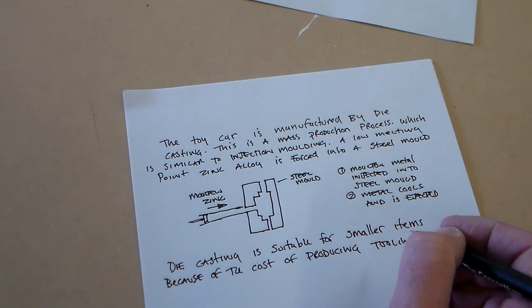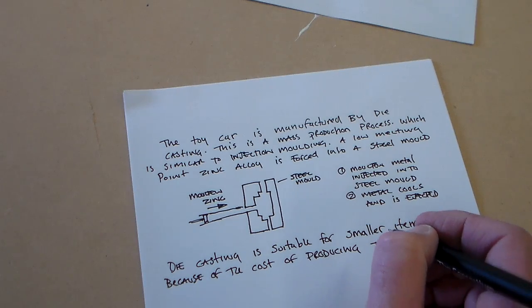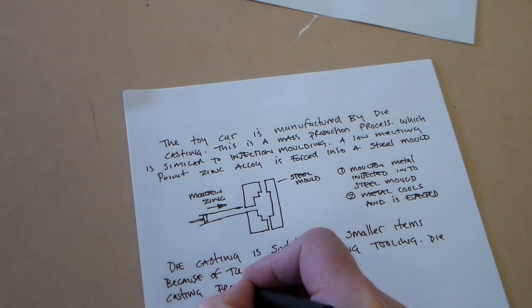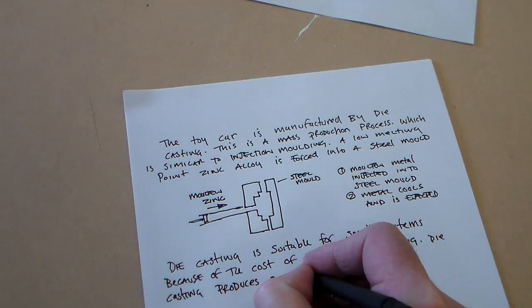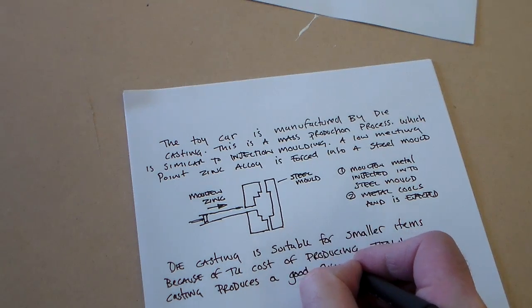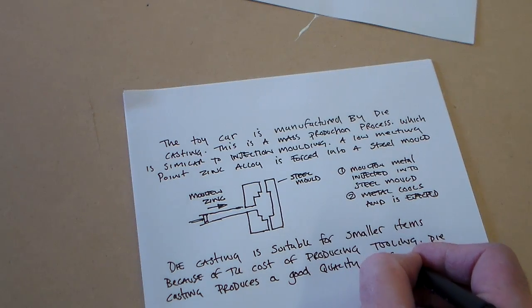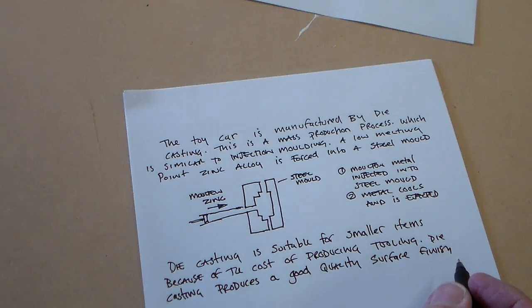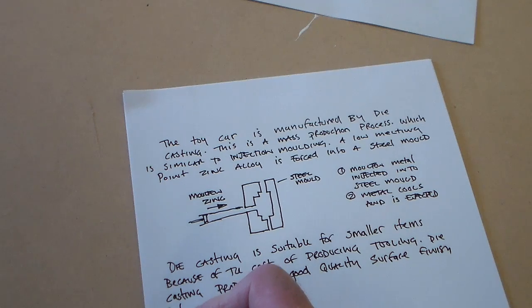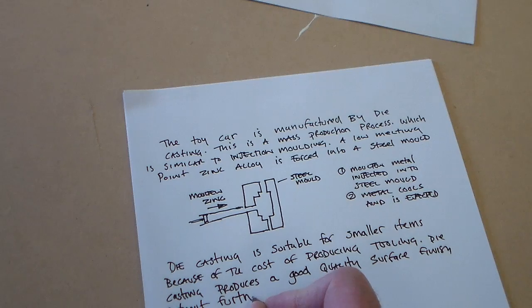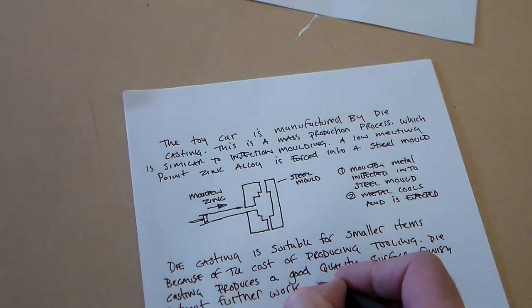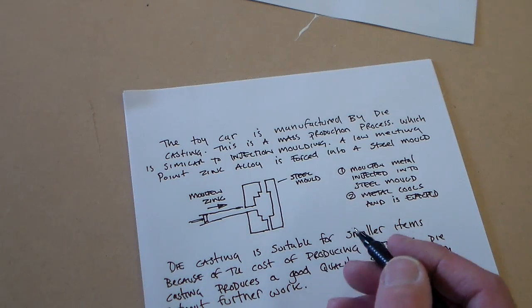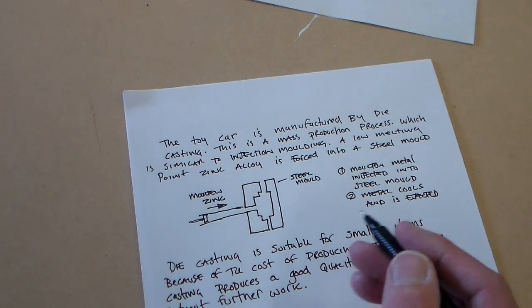The good finish on the tooling always means that the die casting comes out with a good surface finish. So we can say that die casting produces a good quality surface finish and that's from the mold, without further work. And that means it's good for the toy car because obviously they can just paint the car. The car is probably just enamel painted and that can be done quite quickly without too much surface preparation.